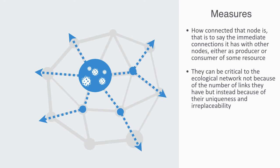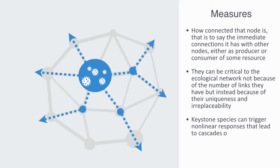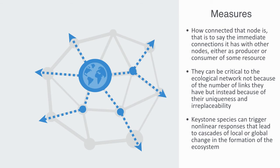With their high influence on the system, keystone species can trigger non-linear responses that lead to cascades of local or global change. More generally, we may also have abiotic critical elements such as the level of precipitation, pH level of the soil, or other geological factors that form critically sensitive values within the network.